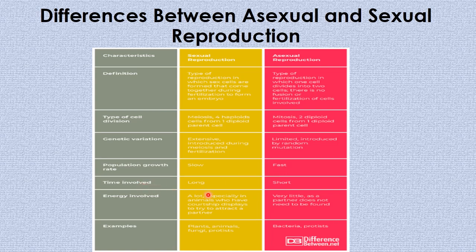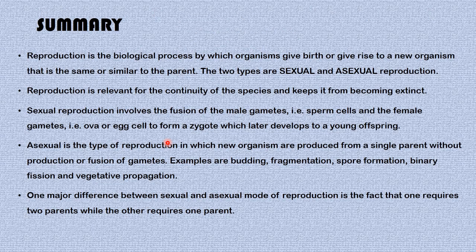The time taken in sexual reproduction is longer while the time in asexual reproduction is shorter. In sexual reproduction a lot of energy is involved, especially in animals that must compete and display to attract a partner, whereas in asexual reproduction energy involved is very little as a partner does not need to be found. Examples: plants, animals, fungi, and protists undergo sexual reproduction, whereas bacteria and protists undergo asexual reproduction.